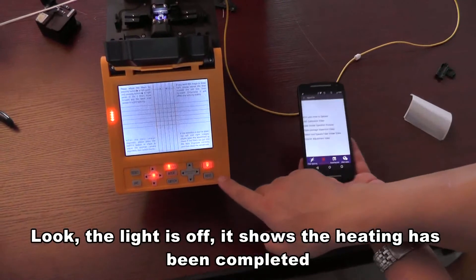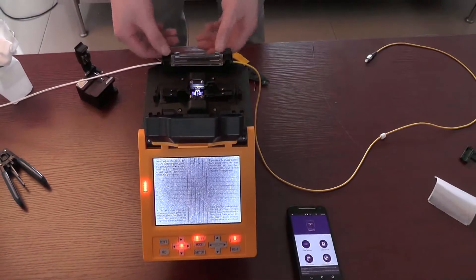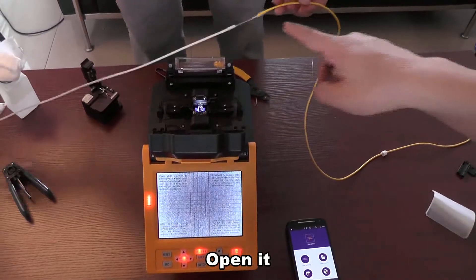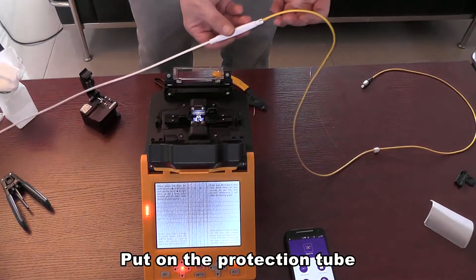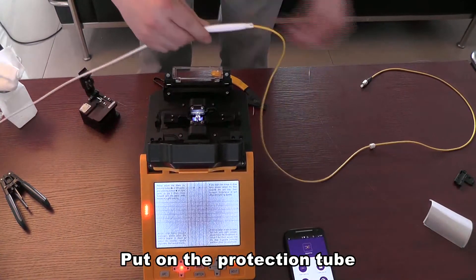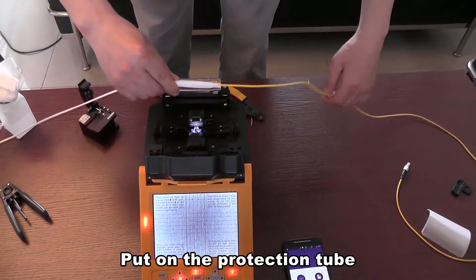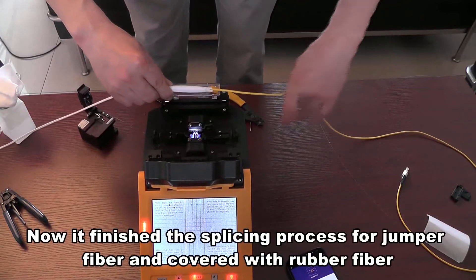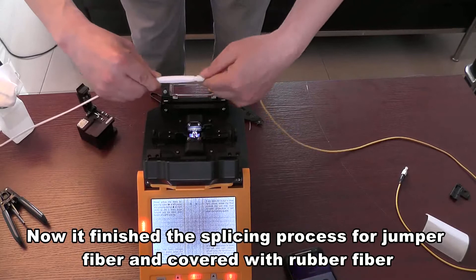Look, the light is off. It shows the heating has been completed. Open it. Put on the protection tube. Now it finished the splicing process for jumper fiber and covered with rubber fiber.